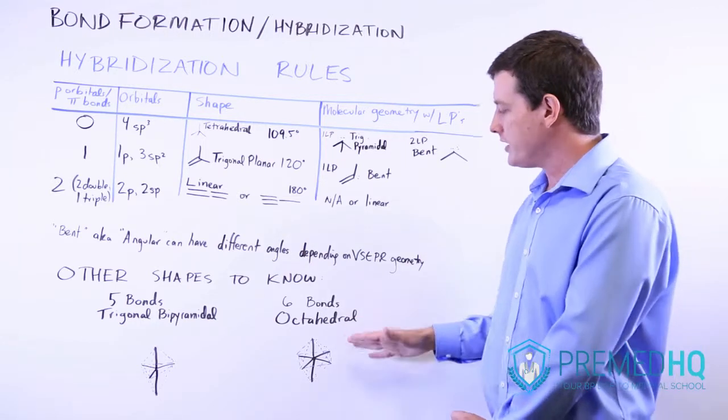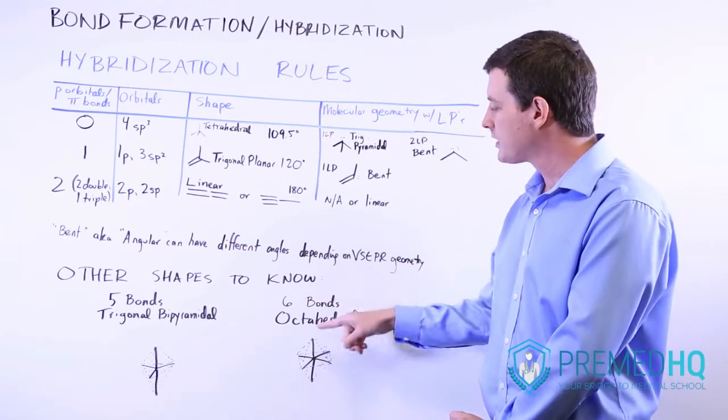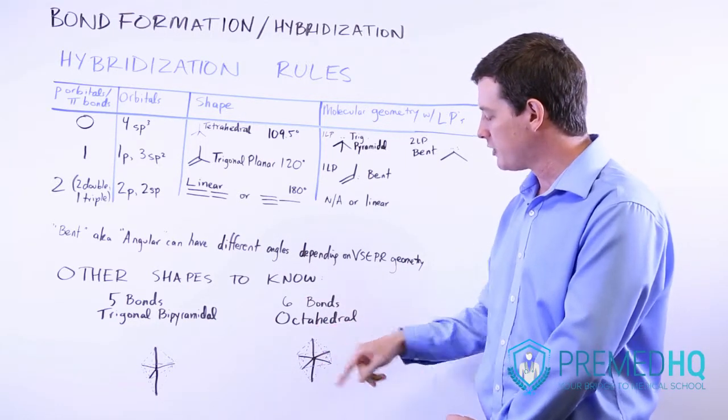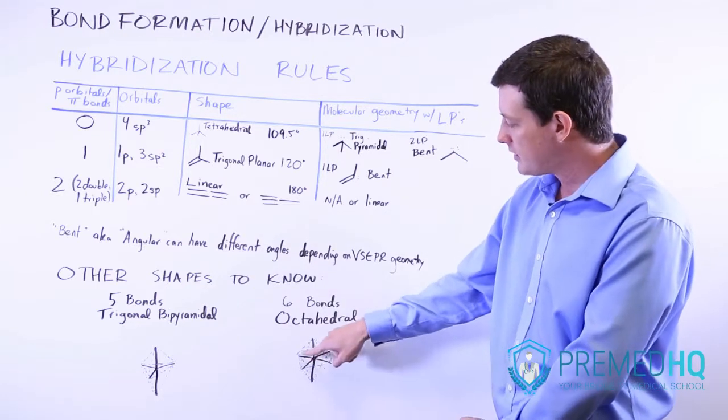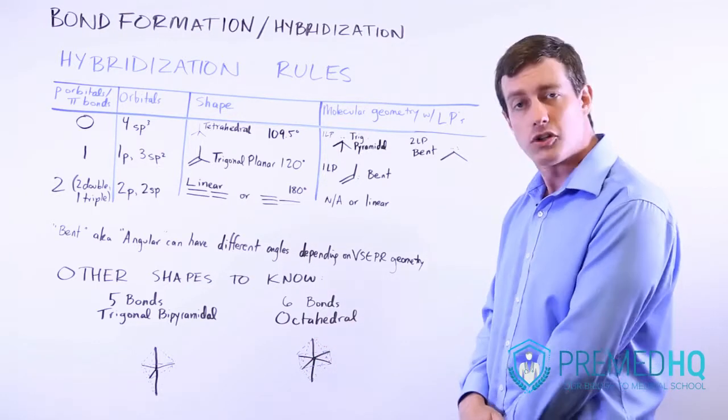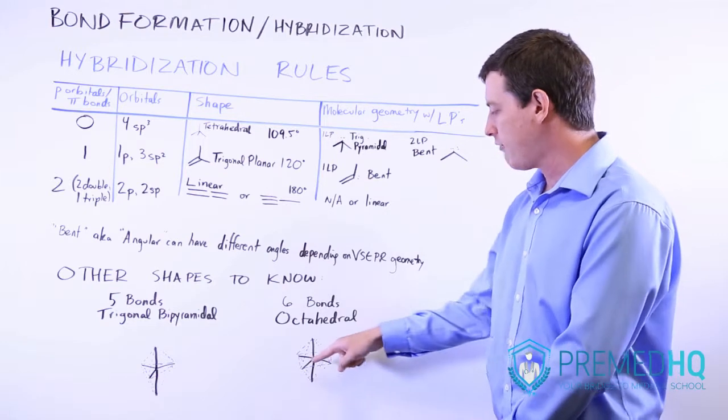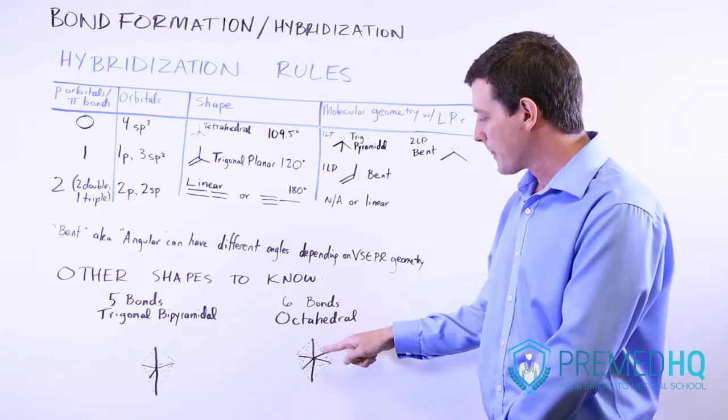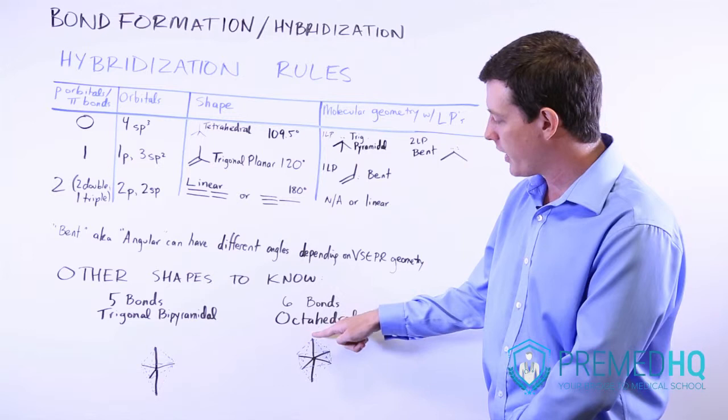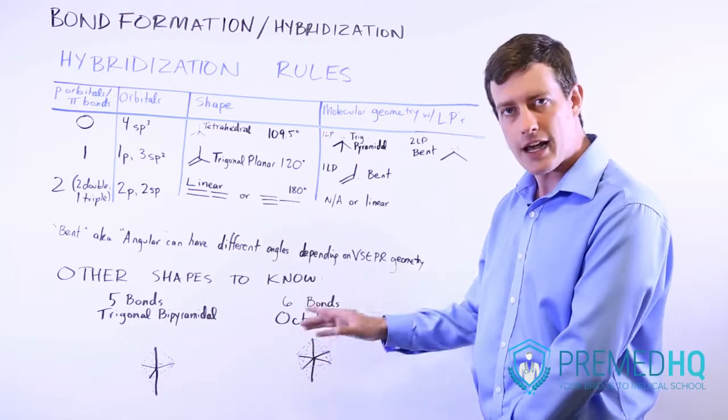And one that you'll encounter a fair bit will be the octahedron which is when there are six atoms binding your central atom there. And so notice the six bonds here drawn in black and that forms a square base that forms a pyramid going up and a pyramid going down.